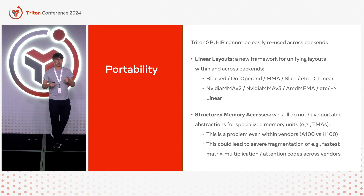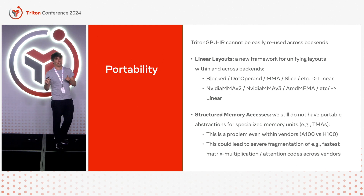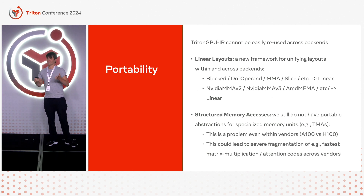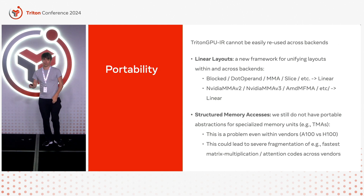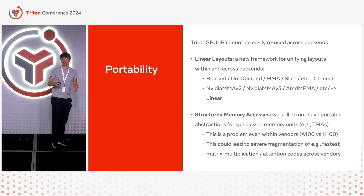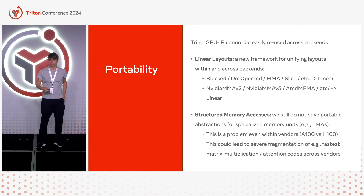Another big thing important for portability is structured memory accesses. The performance I showed earlier uses an experimental language feature for Hopper called TMAs — Tensor Memory Accelerator. It's fast, but if you try to run it on A100, it just won't run. In a world of more hardware heterogeneity, even within a single vendor, we don't want to duplicate our kernels. For other vendors like Intel, structured memory accesses are also very important, and without a core abstraction for them, creating a third-party backend becomes more painful. I'm pretty worried about fragmentation between kernels using TMAs and those not using TMAs.